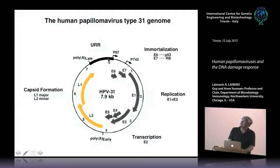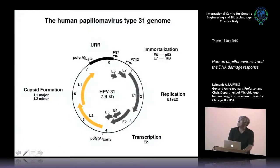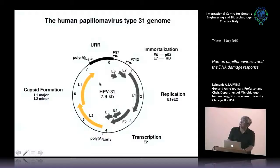E1 also acts as a helicase and recruits cellular enzymes to replicate the genome. There are no polymerases, no single-stranded binding proteins, none of the accessory proteins necessary for replication encoded by the virus, because the virus uses the cellular machinery. There are two minor proteins, E4 and E5, associated with the late phase. And there are two capsid proteins: L1, the major one that forms the basis of the prophylactic vaccine, and L2, the auxiliary protein necessary for infection.